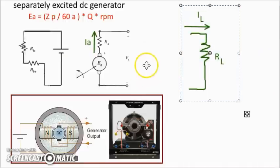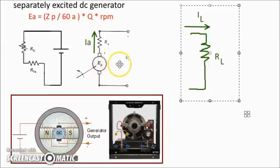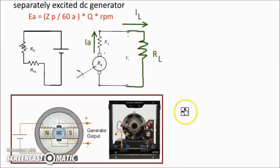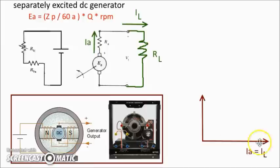The first measurement we did in lab three was the open circuit measurement. When the generator is open circuit, the armature current is zero. When armature current is zero, the terminal voltage Vt and Ea are the same, so we can measure Ea by simply measuring terminal voltage. After this, we connected the load to the terminal. In a separately excited DC generator, the load current and armature current are the same because they are in series, so Ia and IL are equal.